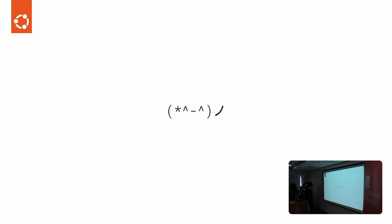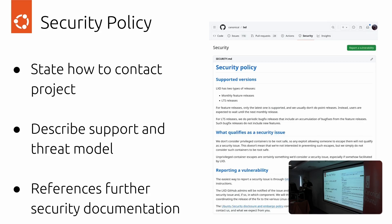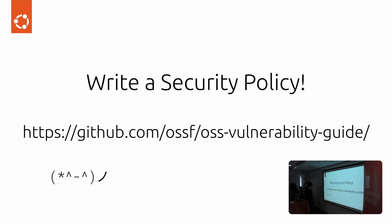Please raise your hand if you work on a FOSS project. Now raise your hand if you have written a security policy. Security policies are extremely important. Their primary purpose is to explain how a reporter can contact you. This is LXD's security policy — a model example. They state how to contact the project, describe their threat model, and link to other security documentation. If you take one thing away from this talk, please go home and write a security policy if your project doesn't already have one. The OpenSSF has great guides, and at the end of these slides there are resources you can click.